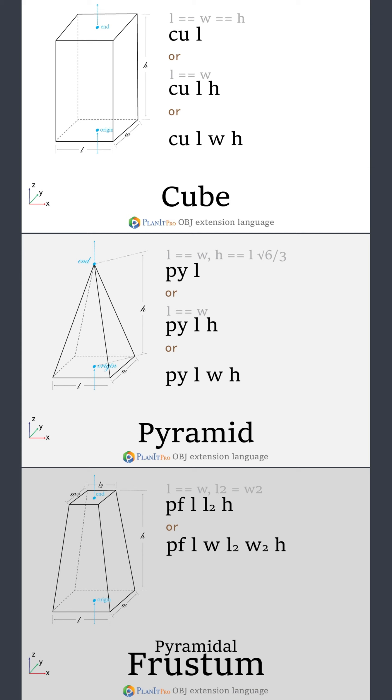The pyramid has almost the same three formats as the cube except the top is a point instead of a rectangle. The pyramidal frustum is like a cube but the top and the bottom have rectangles of two different sizes. That's why you can define L for the length of the base, then L2 for the length of the top.